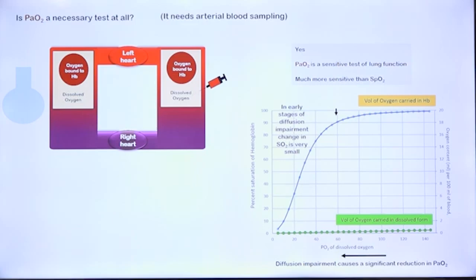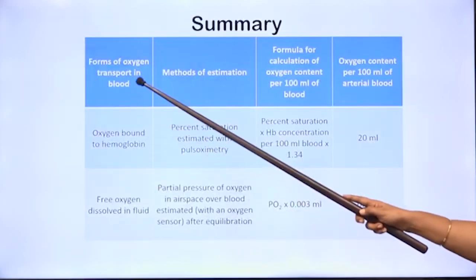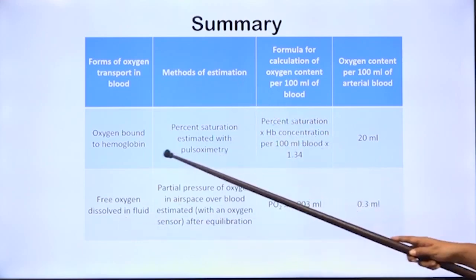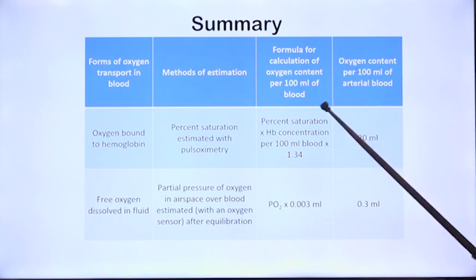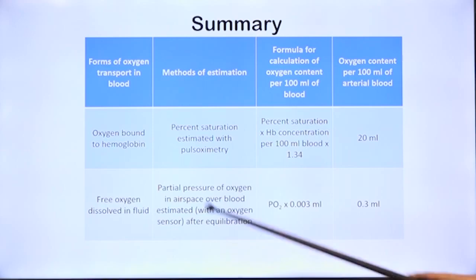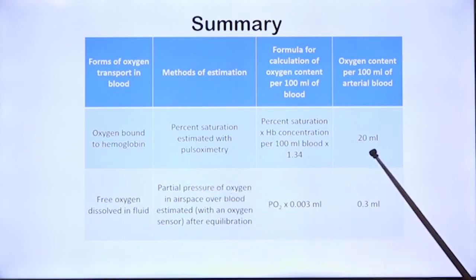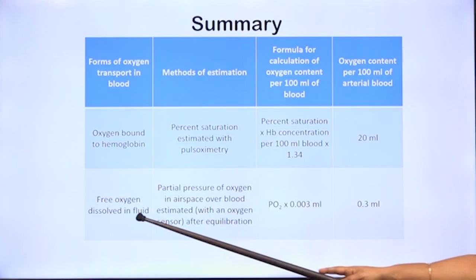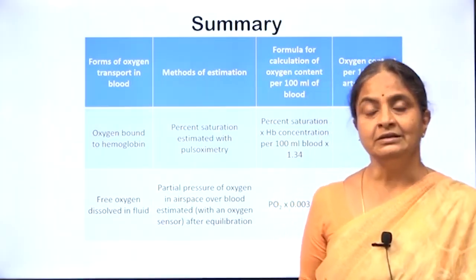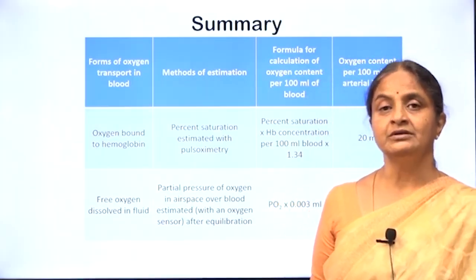In summary, we discussed forms of oxygen transport in blood, methods of estimation of each form, formulae for calculating total oxygen carried per 100 ml of blood, and actual oxygen content in arterial blood — 20 ml per 100 ml bound to hemoglobin, and just 0.3 ml per 100 ml dissolved. The next session will be on tissue hypoxia. Thank you for your attention.